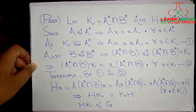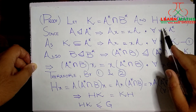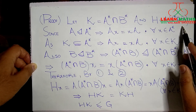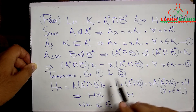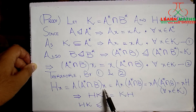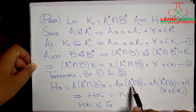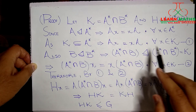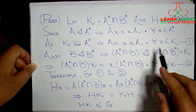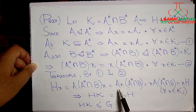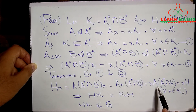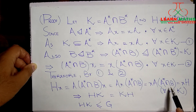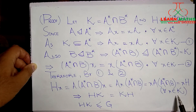Using these two results, we show HX = XH. HX = A·(A* ∩ B)·X. Using Result 2 we can interchange, giving X·(A* ∩ B), and then using Result 1, which says aX = Xa for all X in K, we interchange again to get X·A·(A* ∩ B) = XH. So we have proved HX = XH for all X in K, meaning HK = KH.